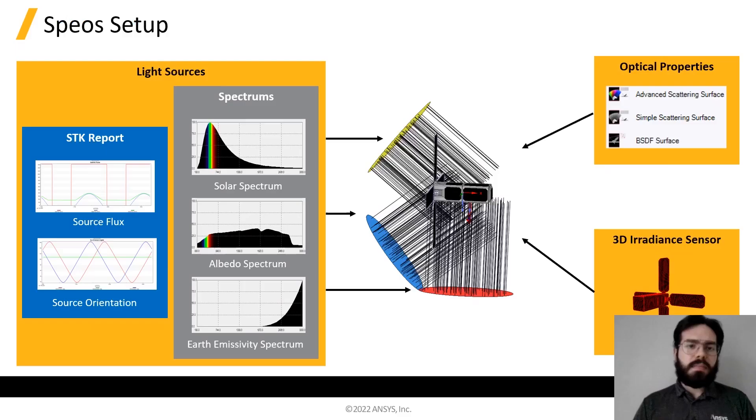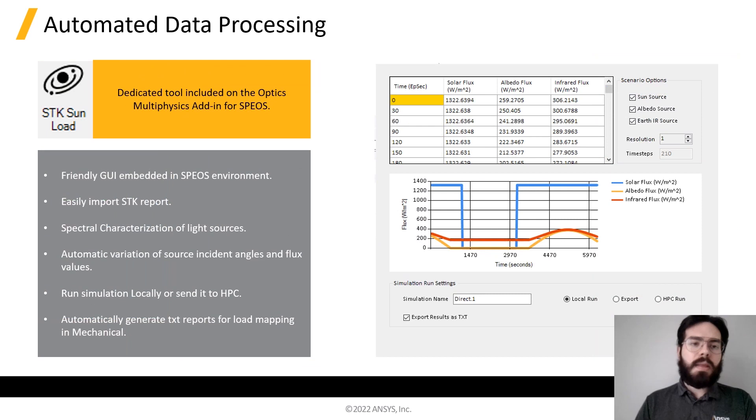So now I'll pass it over to Felipe to talk about the setup in SPEOS. This is how the overall SPEOS setup looks like. After processing the STK report, SPEOS will automatically model all the incident sources accounting for the spectral variation. The user will need to assign optical properties to each one of the components on the assembly and define a 3D irradiance sensor on the regions of interest for the thermal analysis.